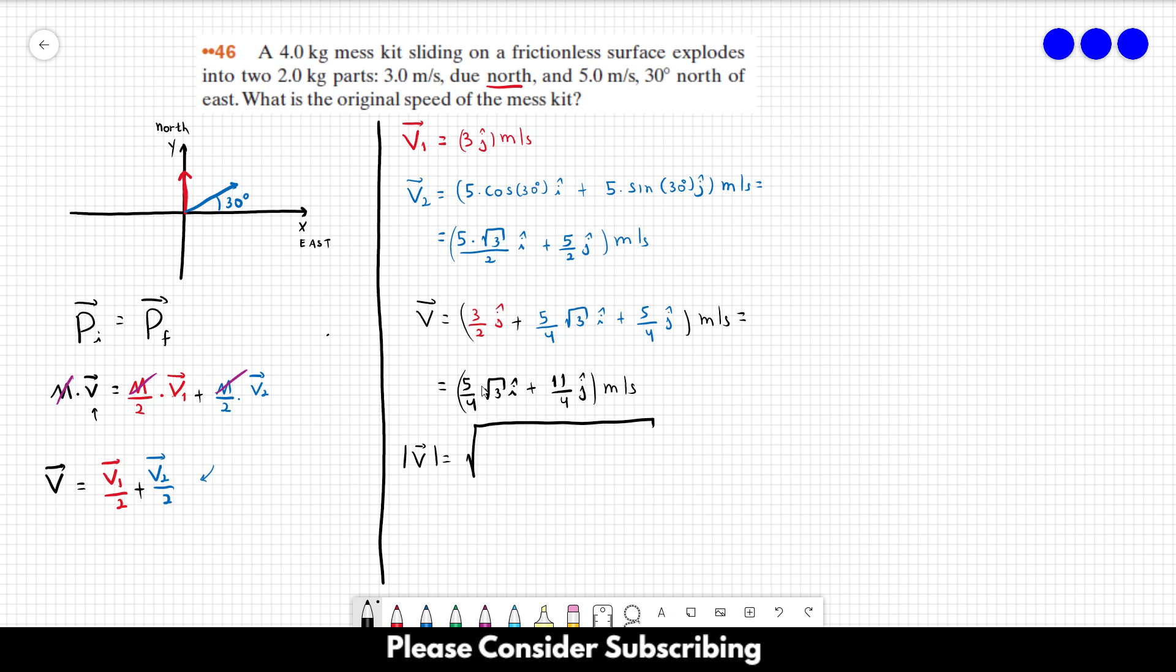So 5 over 4 square root of 3 squared plus 11 over 4 squared, and this gives us exactly 3.5 meters per second, which is the answer of this problem.